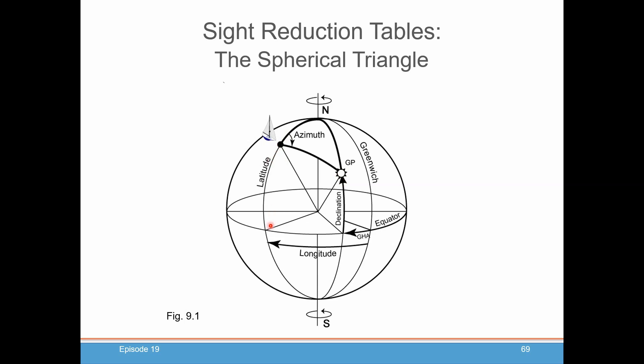So again, latitude, declination, LHA give us this side, this side, and it helps to tell us what this angle is here. And all the site reduction tables are is a big table of solutions to triangles with various values for latitude, declination, and LHA. Pretty simple.